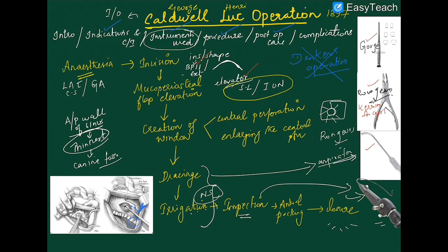Additional complications include: post-operative anesthesia or paresthesia of the maxillary tooth area; epiphora due to blockage of the tear duct; tooth root fractures, especially of the canine tooth which has a long root; recurrence of pathology; nasal bleeding or hemorrhages; and intraoral infections due to poor wound healing. That concludes the Caldwell-Luc operation topic. The next video will cover functional endoscopic sinus surgery.